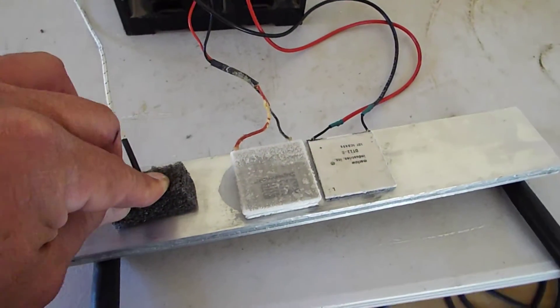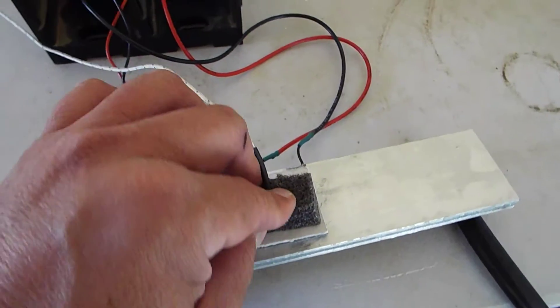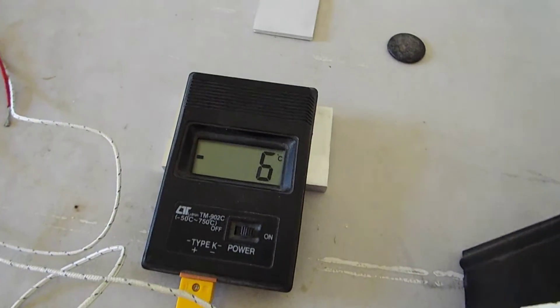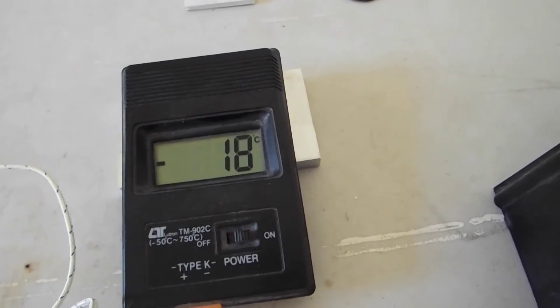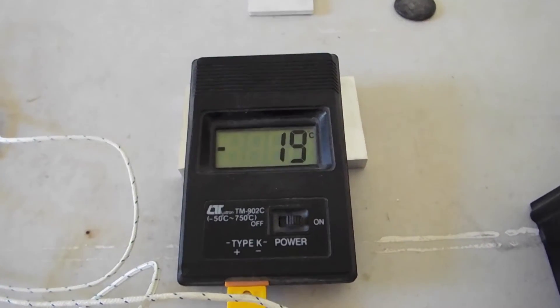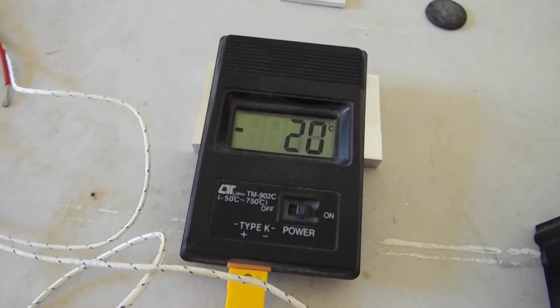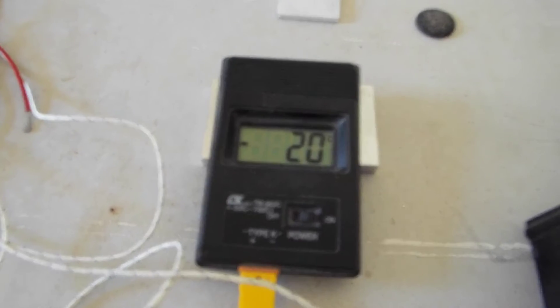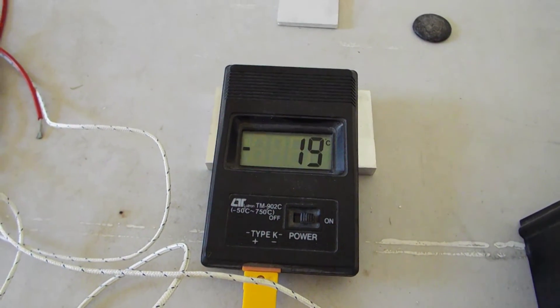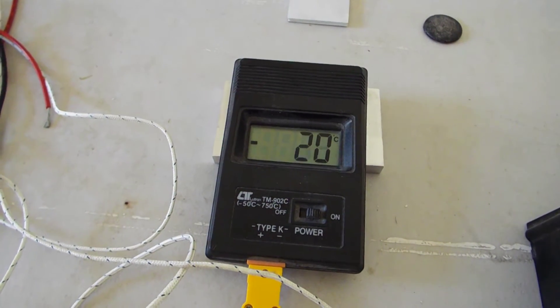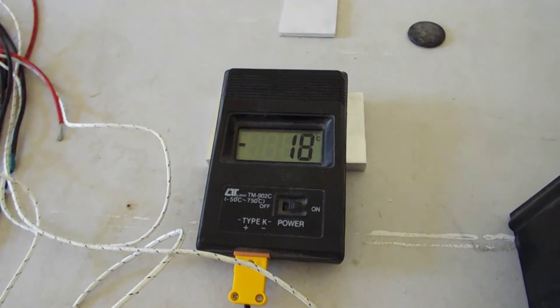I'm next going to move the thermocouple to the Marlow Industries single stage cooler and press it against that surface. Let's see how cold we get. It looks like about minus 19, minus 20 degrees C on the single stage Marlow DT-12.